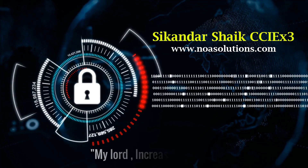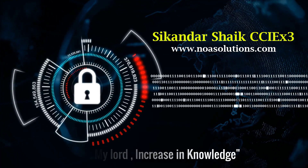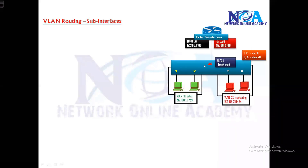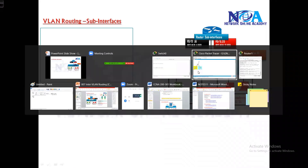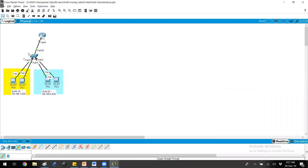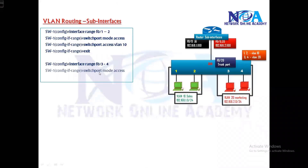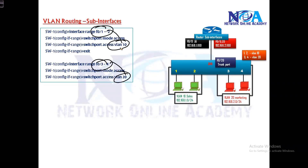Bismillahirrahmanirrahim. Let's try to see the configuration. The complete lab configuration is here. We assume this connectivity is already done, so I have already connected this part. We connected router F0/0 to F0/20 here. The first thing will be ensuring that the VLAN configuration is there. In my example, port number one and two belong to VLAN 10 and port number three and four to VLAN 20. Assign the ports into the respective VLANs as per your topology.